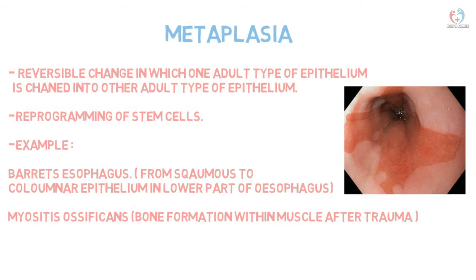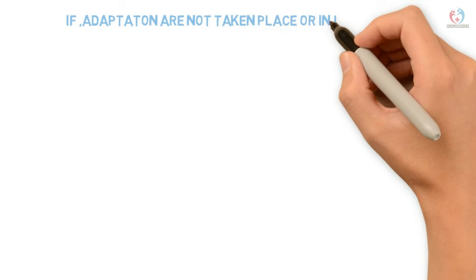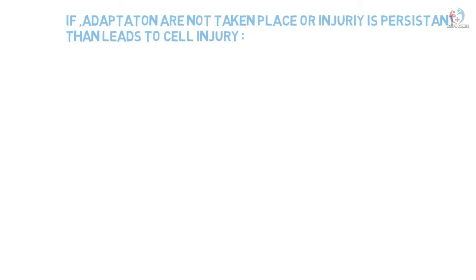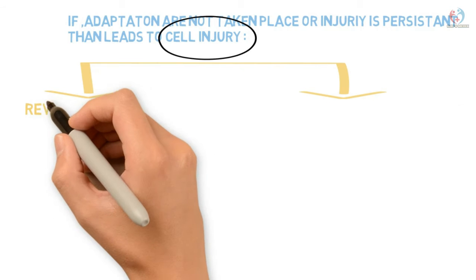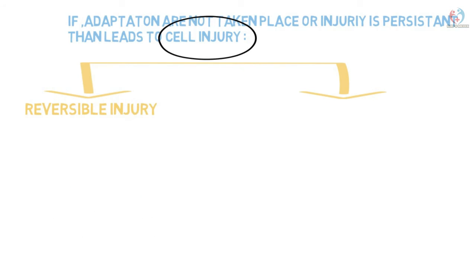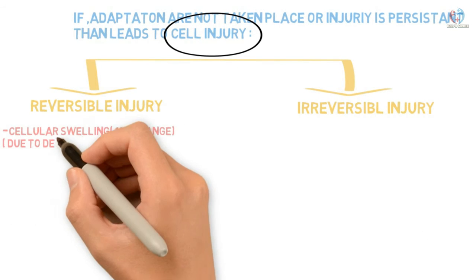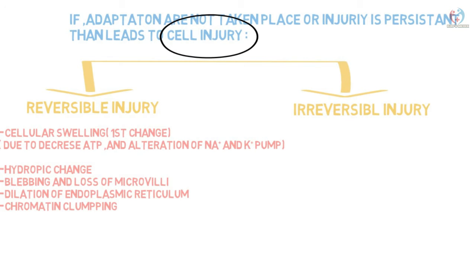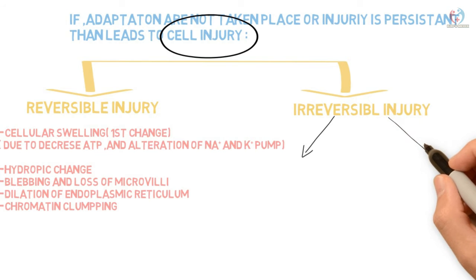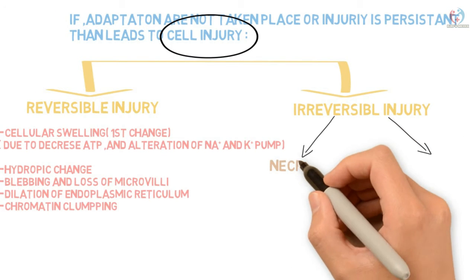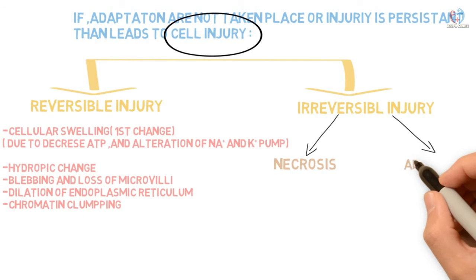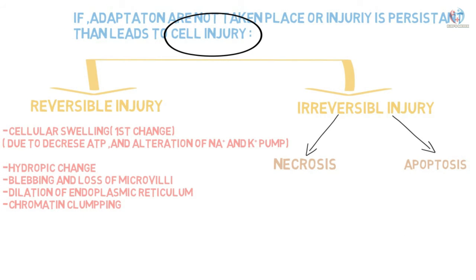If cellular adaptation is not taking place or injury is persistent, it leads to cell injury. Cell injury is divided into reversible and irreversible types. Features of reversible injury include cellular swelling, decreased ATP formation, alteration of the sodium-potassium pump, hydropic change, blebbing, loss of microvilli, dilation of the endoplasmic reticulum, and chromatin clumping. Irreversible cell injury is classified into necrosis and apoptosis.